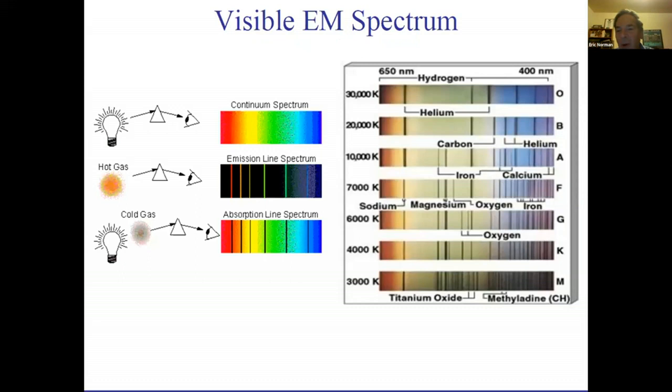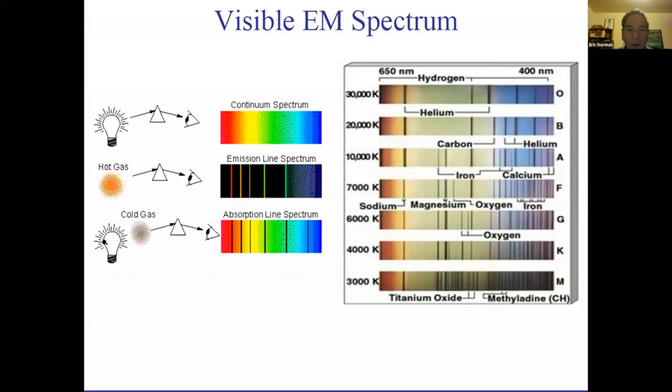If you take white light and send it through a prism, it breaks up into a continuous distribution of all colors of the spectrum. If you have some hot gas and pass its light through a prism, you see discrete lines characteristic of the particular elements in that gas. Similarly, white light shone on a cool gas shows absorption features characteristic of the materials in that gas. In this way we can look at light from stars and galaxies and figure out their elemental compositions.